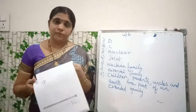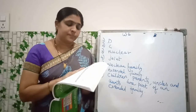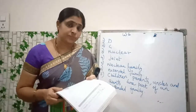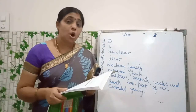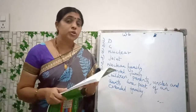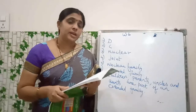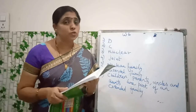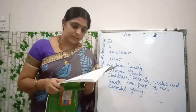Now let us read once, word by word. All of you keep your fingers. Number 1, multiple choice questions: which member is not a part of a nuclear family? Answer is D — grandparent. In the bracket you have to write D.